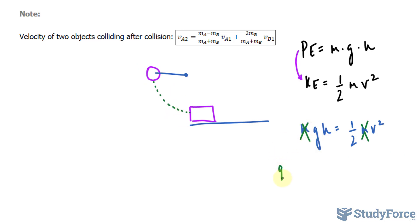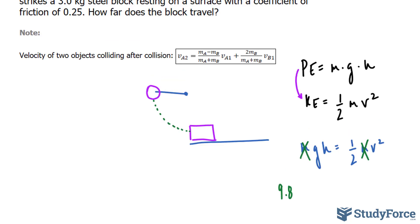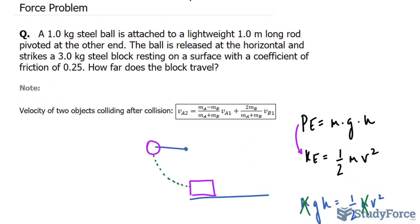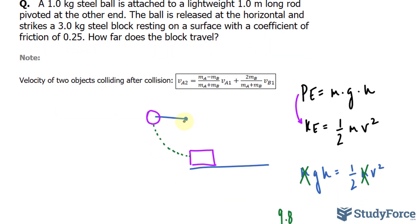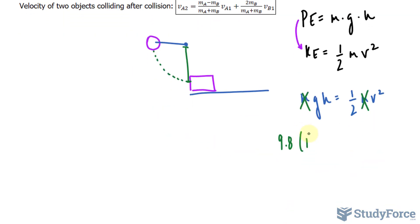So we're replacing this g with 9.8, and we are told that the height, well we're not told what the height is, but we are told that the rod is 1 meter. So we can assume that from here to here is 1 meter, and that will be our height. That's equal to 0.5, and the velocity is what we're looking for. So let's go ahead and find out the velocity of this steel ball being pivoted from that rod.